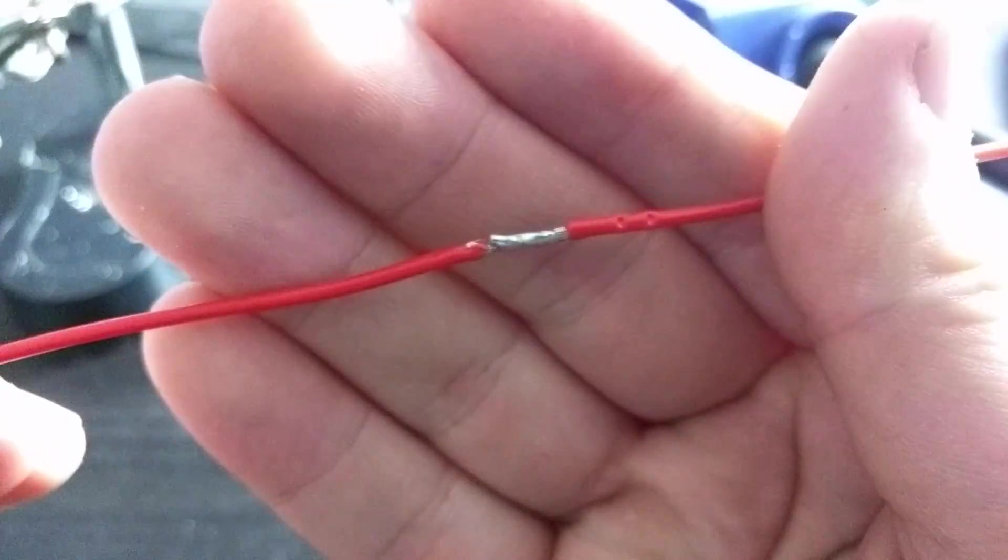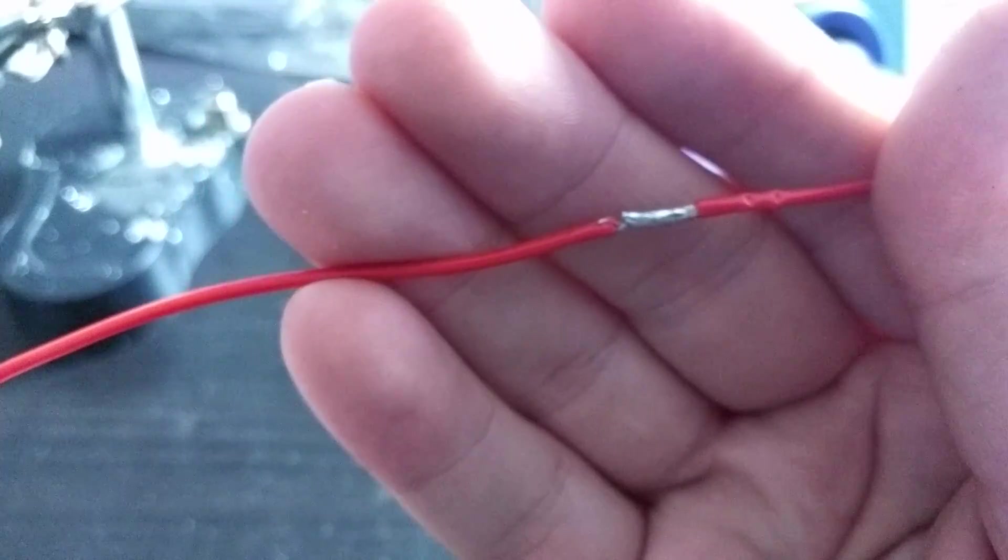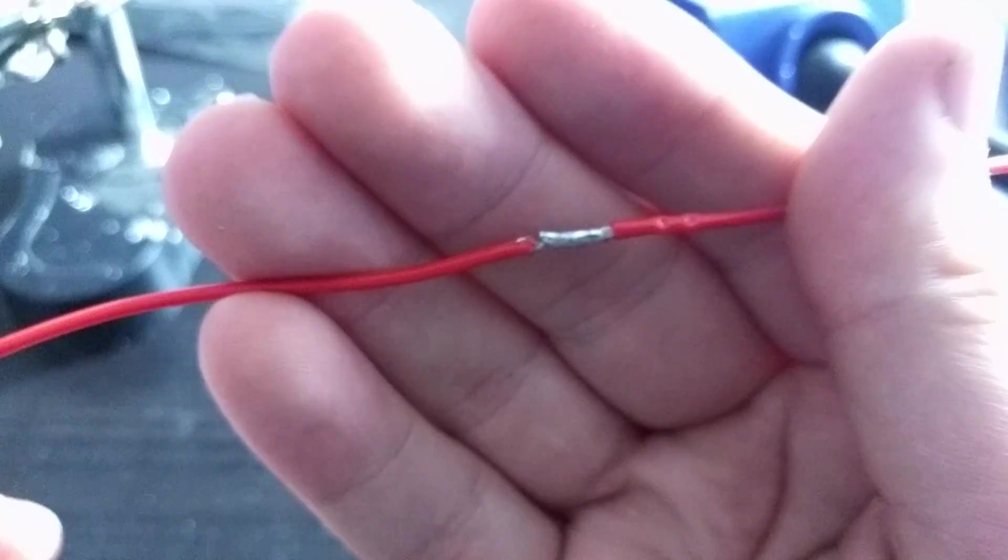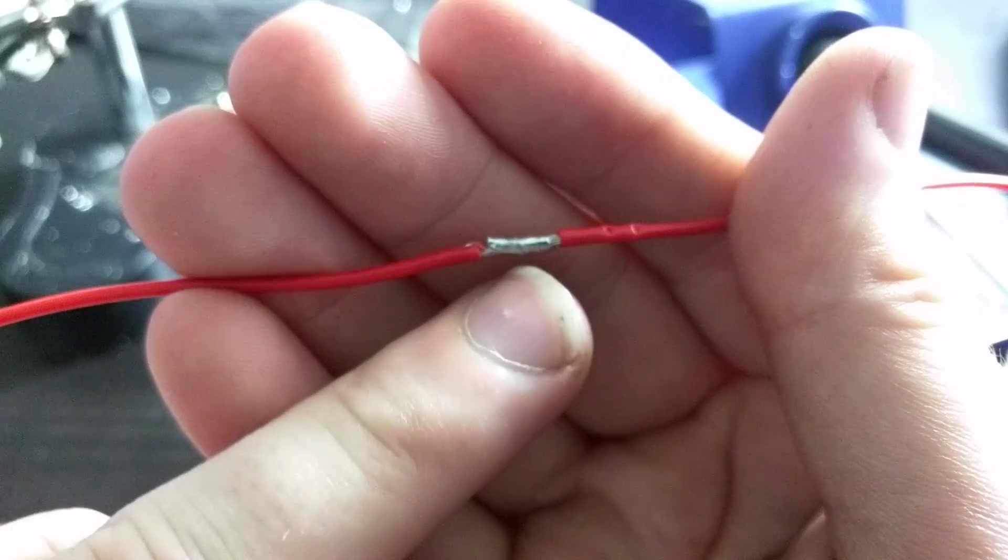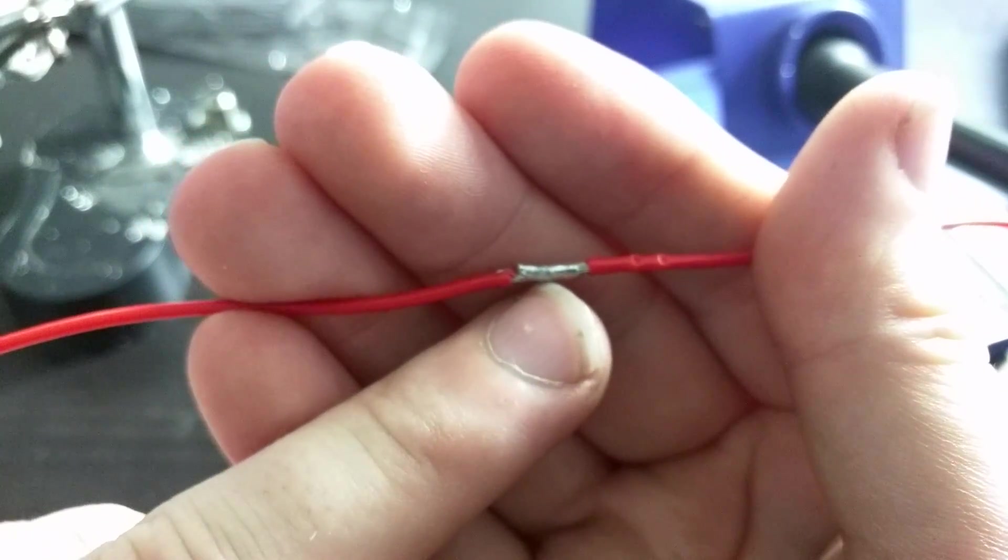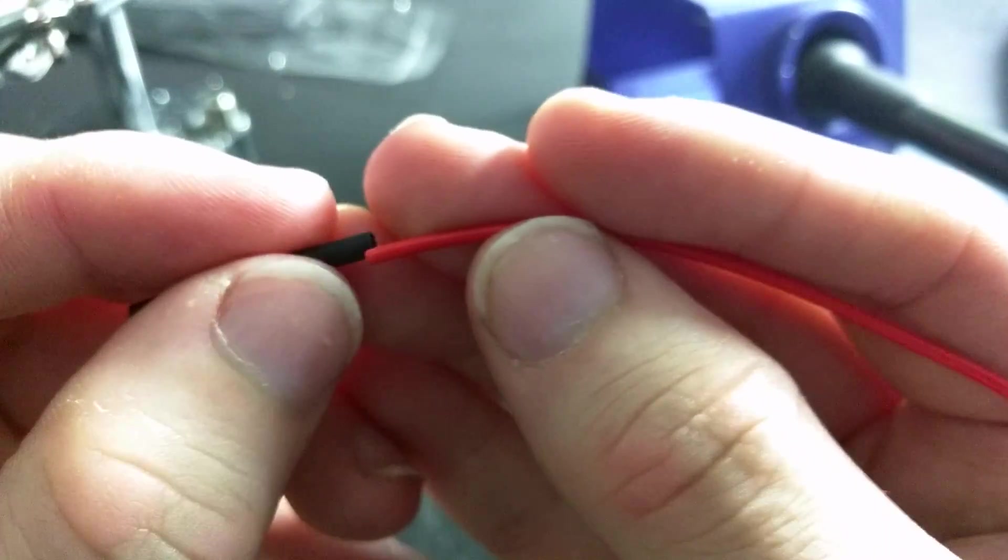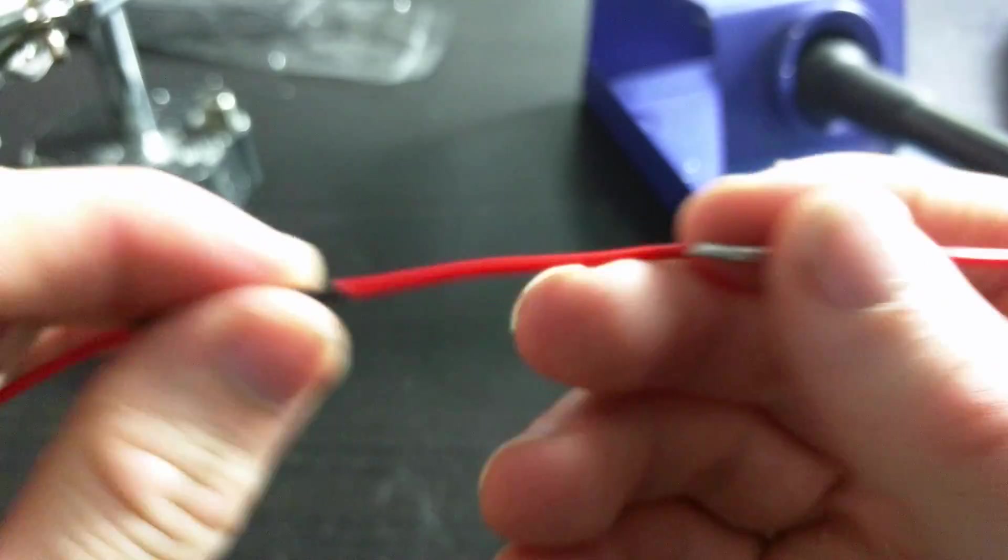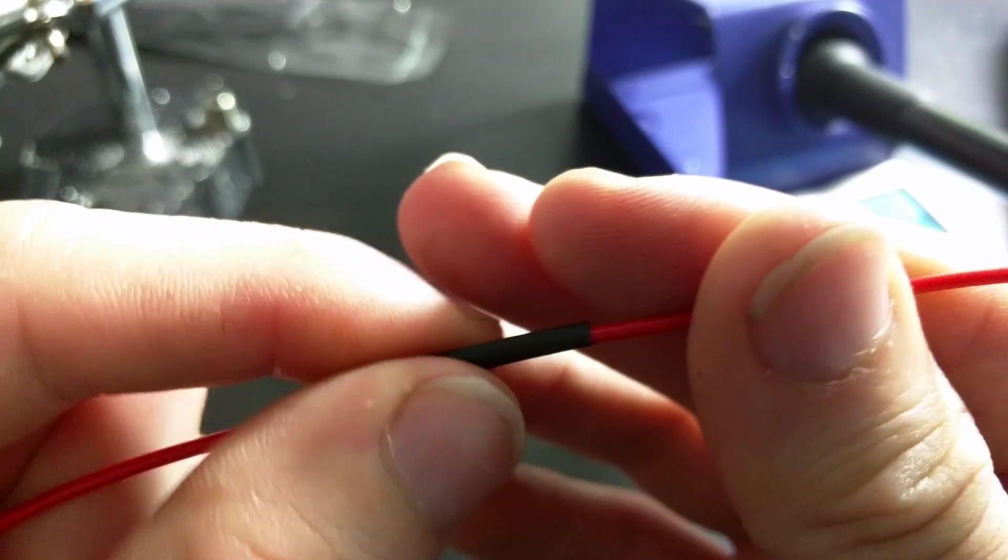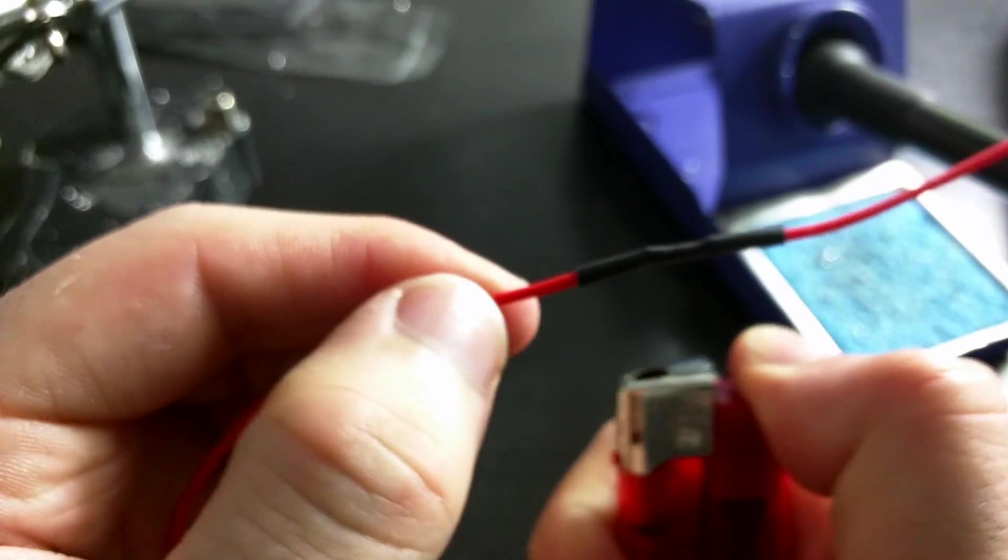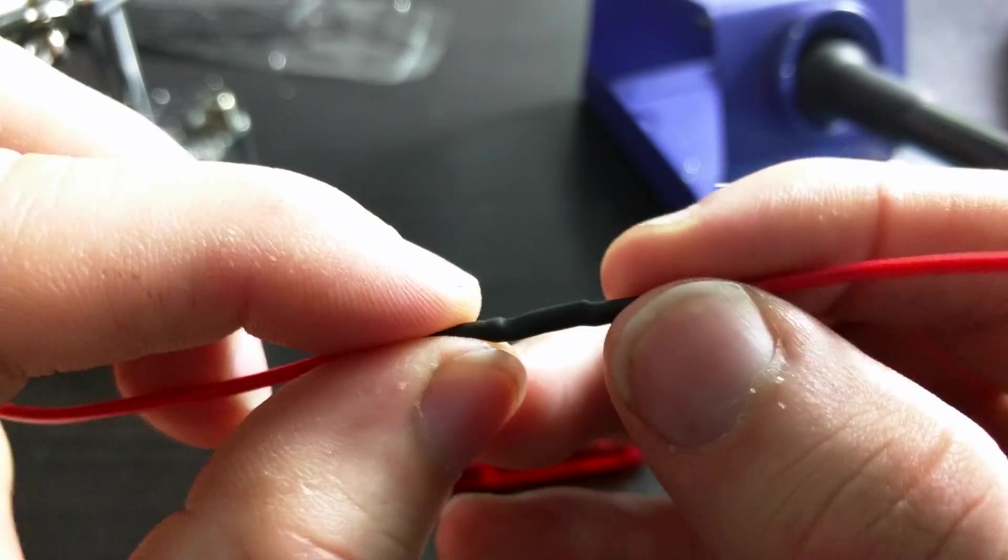Now, I should mention that when you have an exposed joint like this, it's important that you cover it up and re-insulate the wire. If you were to use this wire in a circuit, it is prone to causing a short circuit. So, you should always ensure that exposed connections are re-insulated. The best way to do it is to use heat shrink, which is a form of plastic that you can slide over a wire and over a joint to re-insulate it. When you apply a small amount of heat to the heat shrink, it shrinks around the joint to create a secure insulation.